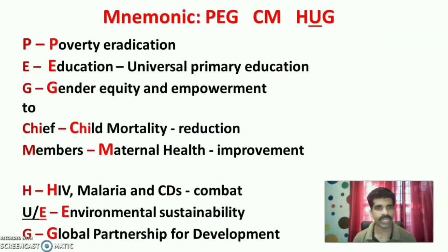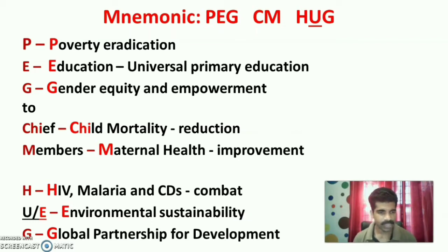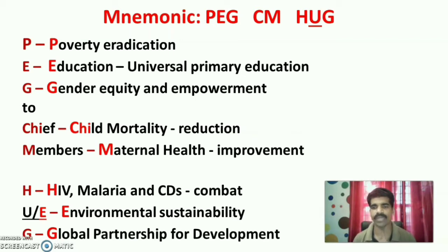P stands for Poverty eradication. E stands for Education — universal primary education. G stands for Gender equity and empowerment. CHIEF stands for Child mortality reduction. MEMBER stands for Maternal health improvement. H stands for HIV, malaria and communicable diseases combat. E stands for Environmental sustainability. The last G stands for Global partnership for development.